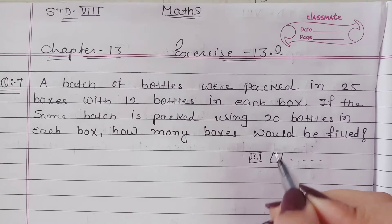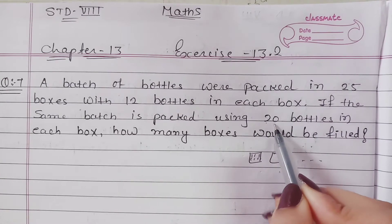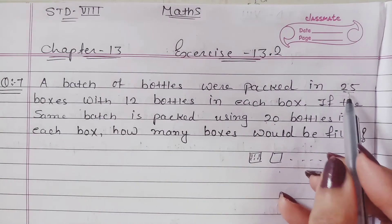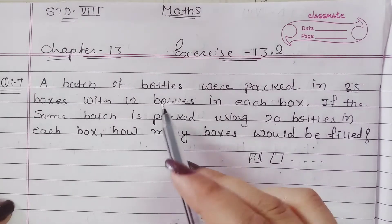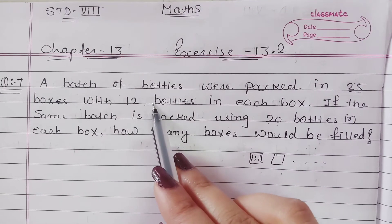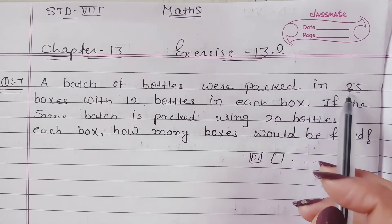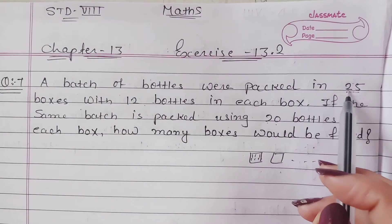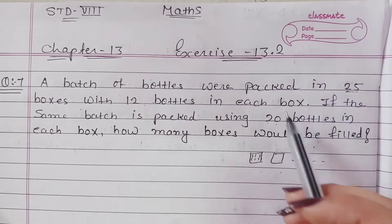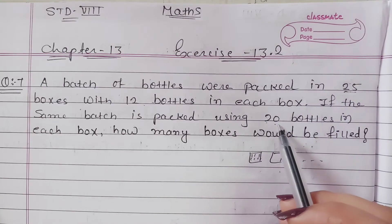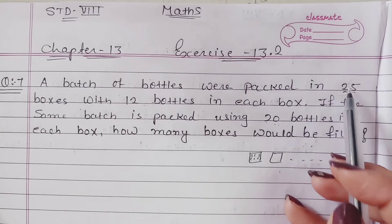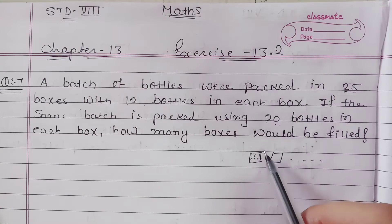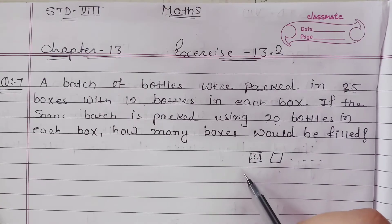If we have 20 bottles in each box, how many boxes would be filled? Obviously, if 12 bottles are filled in each box then 25 boxes are filled. So if the bottles increase, then the number of boxes is smaller. So this is an inverse proportion.